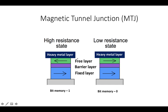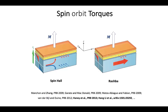Now let's see how the heavy metal can switch the magnetization state of a free layer. I would like to clarify that we will use the inverse of this structure. Magnetization direction in spin-orbit MRAM is switched by spin orbit torque. Spin orbit torque is mainly because of two effects: first, the Spin Hall Effect, and second, the Rashba Effect.